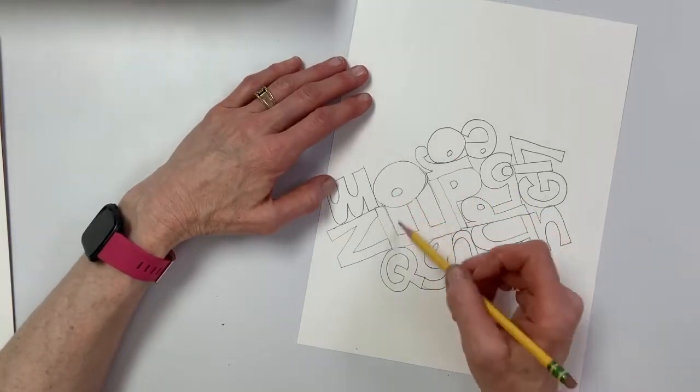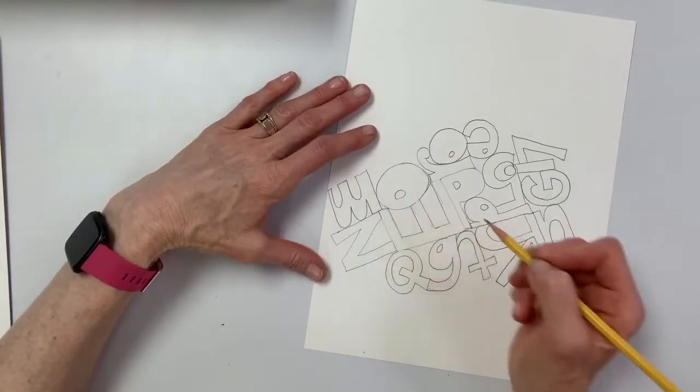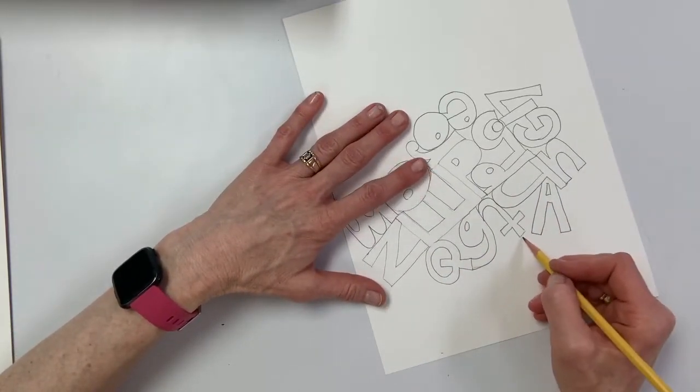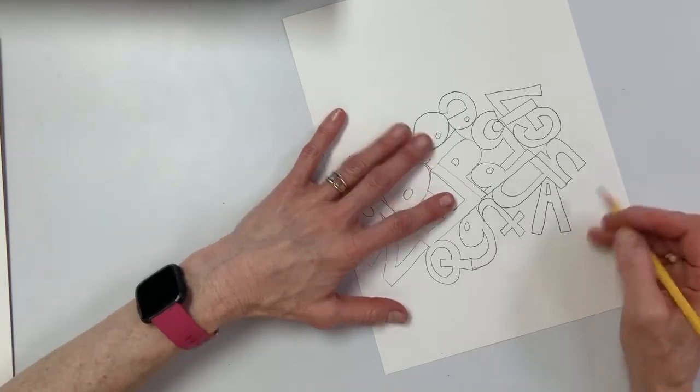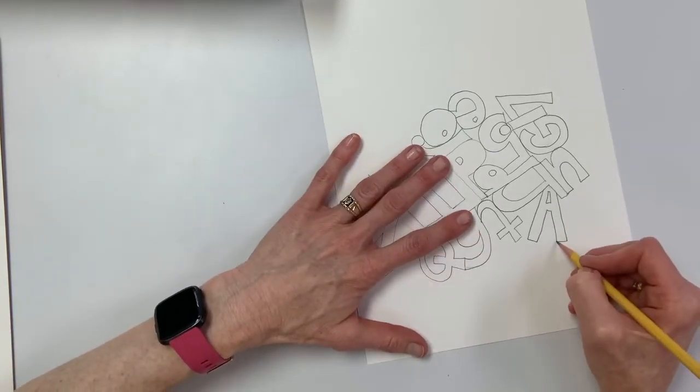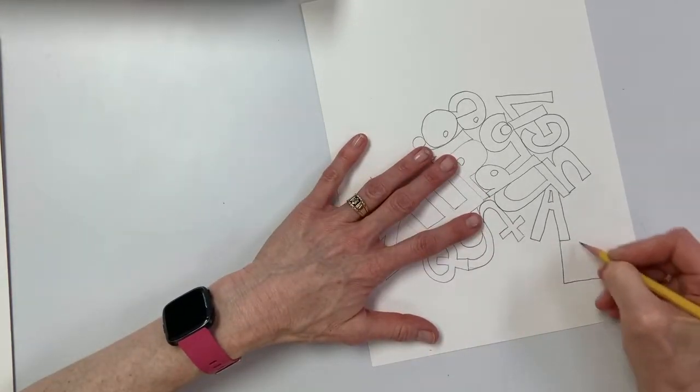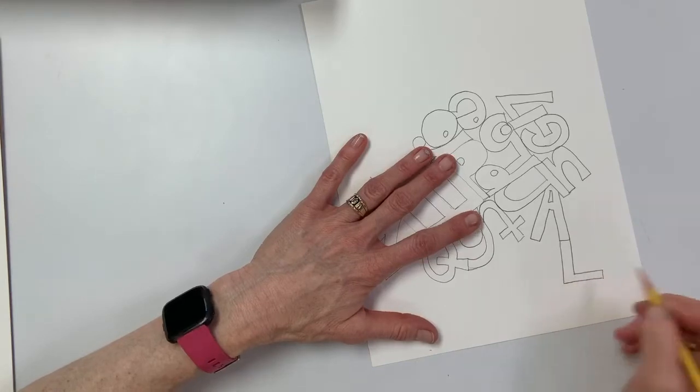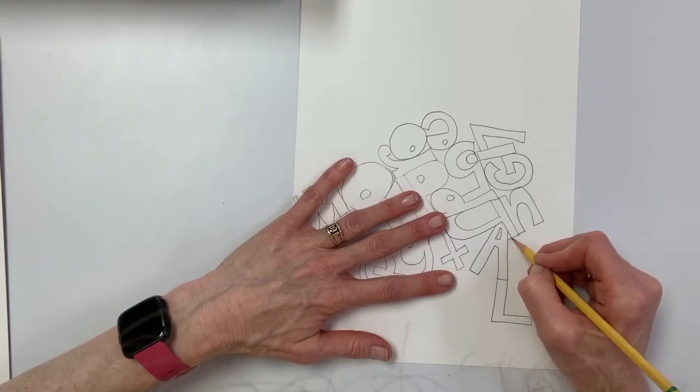I always think it's easy to start with your own initial, your own first initial, just to keep going. And I think I'll do - I can do capital - I'm going to pull this out a little bit more. I'll do a capital L. The lowercase l is really not that exciting, is it? But we'll probably - I mean, I still want to put it in. Why don't I just do it right here?